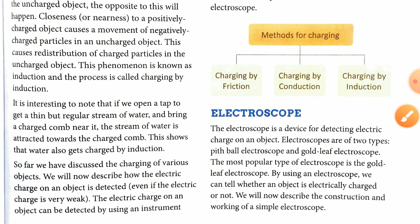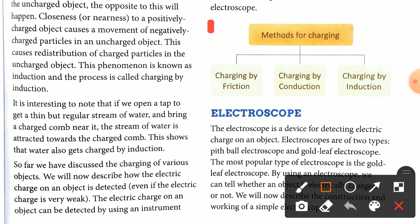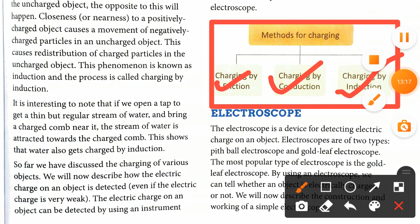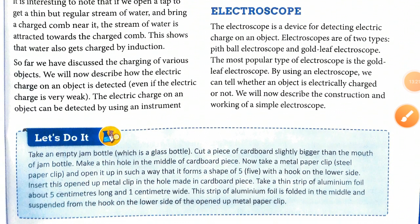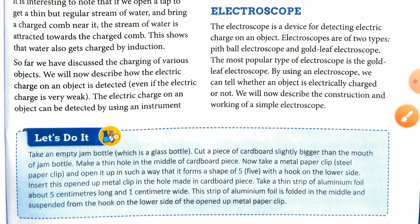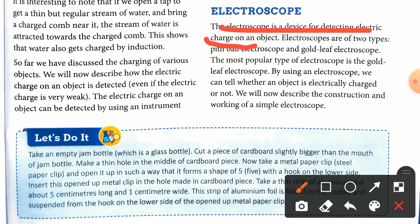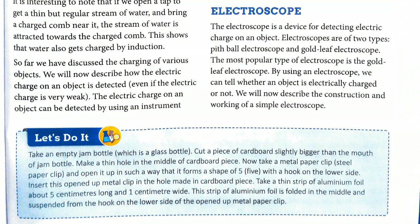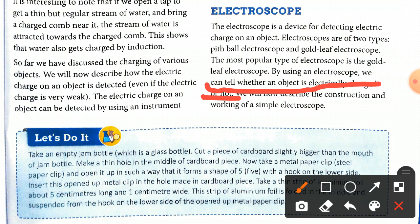The three methods of charging are: charging by friction, charging by conduction, and charging by induction. The electric charge on an object can be detected using an instrument called an electroscope. Electroscopes are of two types: the pitfall electroscope and the gold leaf electroscope. The most popular type is the gold leaf electroscope. Using an electroscope, we can tell whether an object is electrically charged or not.